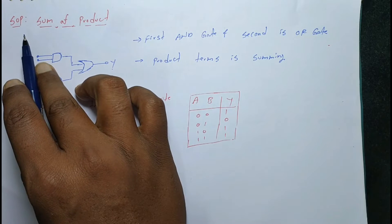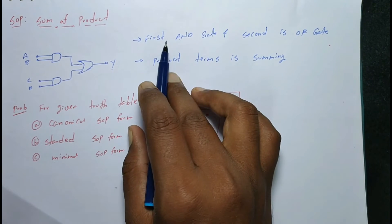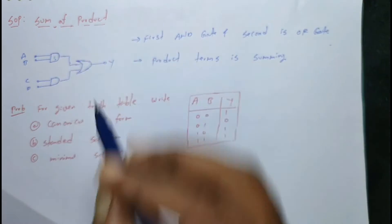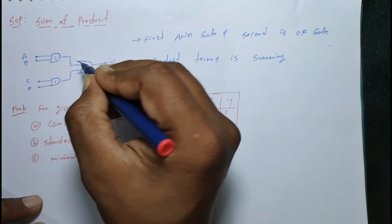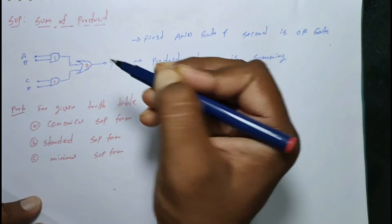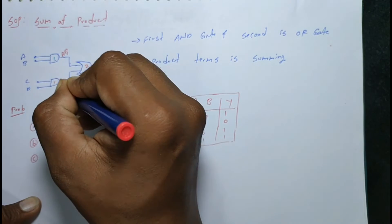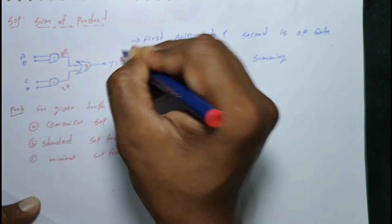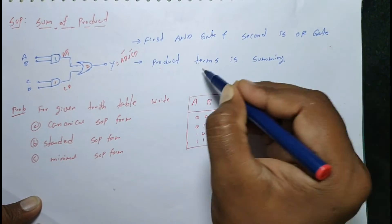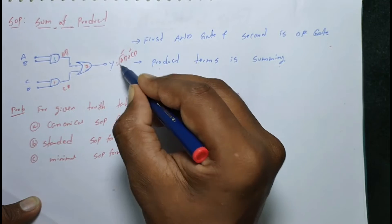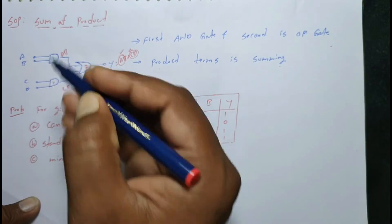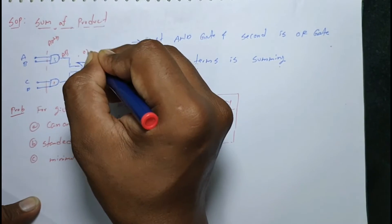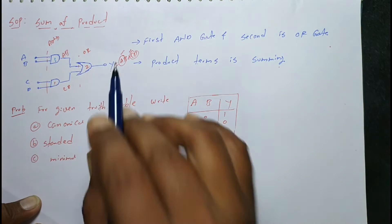In SOP — Sum of Product — the first stage is AND gates and the second stage is OR gates. For example, with inputs A, B, C, D: AB and CD are product terms, giving y equals AB plus CD. The product terms are summed, which is called Sum of Product.